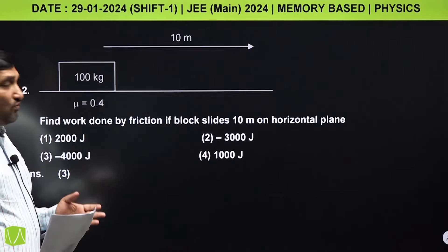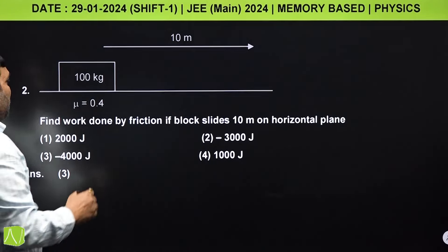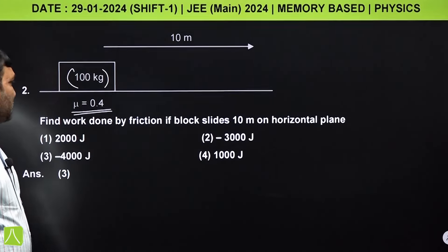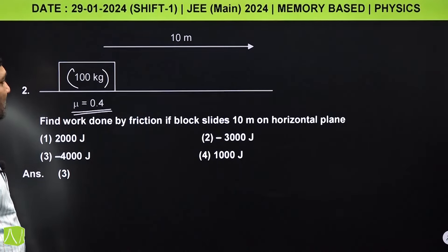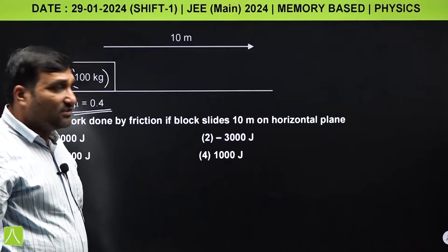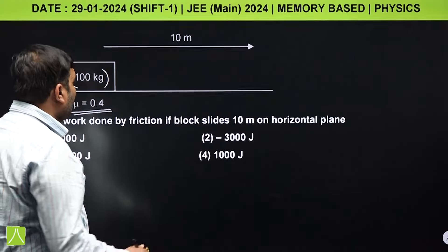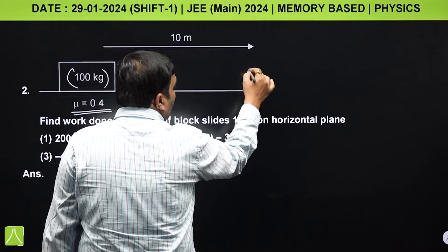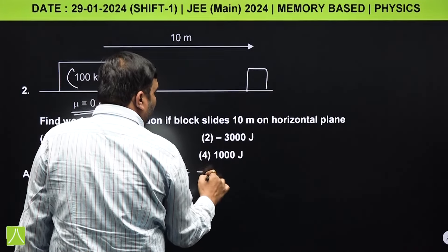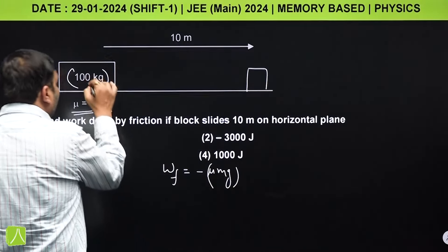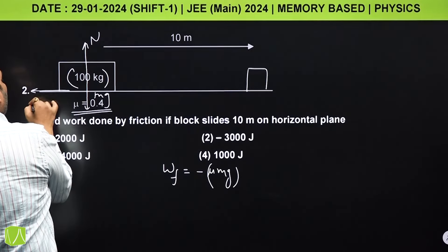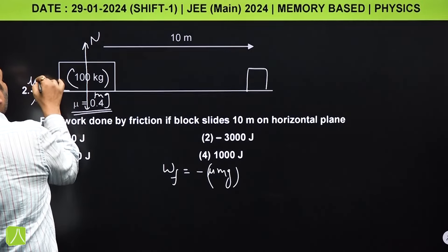Next question is on work done by friction. A block of 100 kg with friction coefficient 0.4 is given. Find the work done by friction if the block slides 10 meters. Using the formula: work done by friction = −μmg·s. The normal force equals mg, so friction force = μmg.